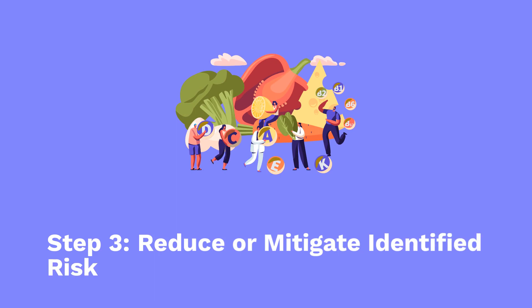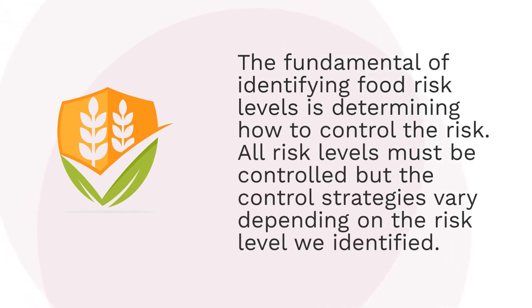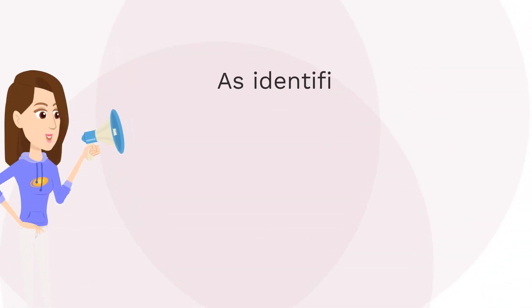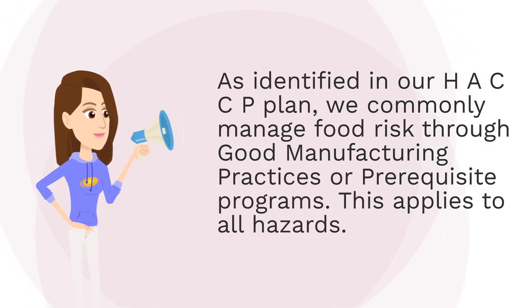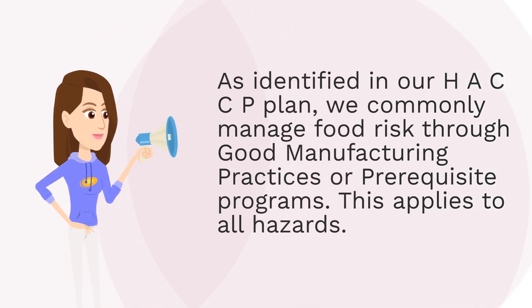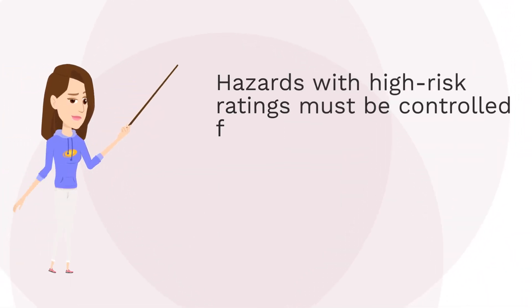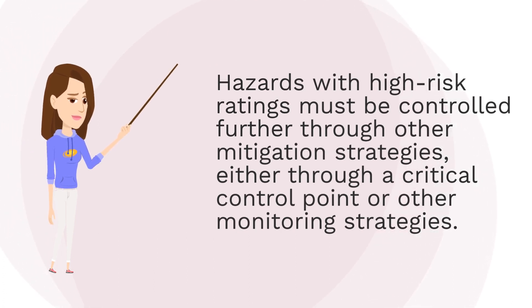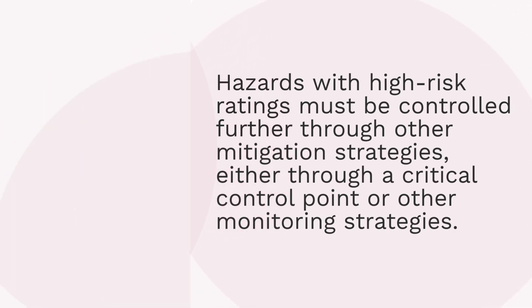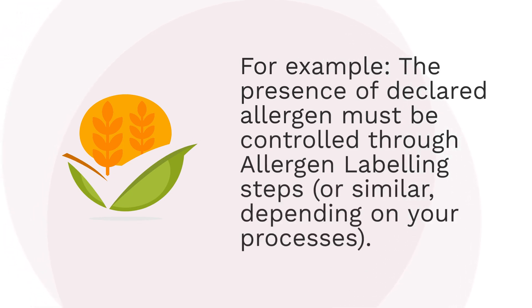Step 3: Reduce or mitigate identified risk. The fundamental of identifying food risk levels is determining how to control the risk. All risk levels must be controlled, but the control strategies vary depending on the risk level identified. As identified in our HACCP plan, we commonly manage food risk through good manufacturing practices or prerequisite programs. This applies to all hazards. Hazards with high risk ratings must be controlled further through other mitigation strategies, either through a critical control point or other monitoring strategies. For example, the presence of declared allergens must be controlled through allergen labeling steps, or similar, depending on your processes.